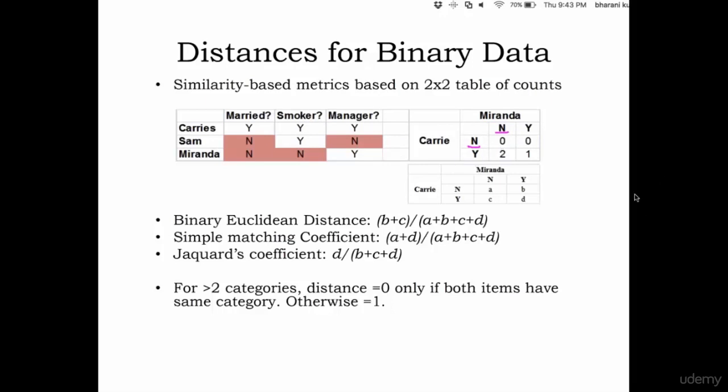Then for Carrie No and Miranda Yes, do you have any instance? No I don't have. Carrie No, Miranda Yes. I don't have even a single instance, so it's zero there.